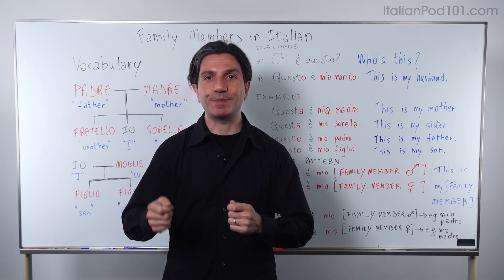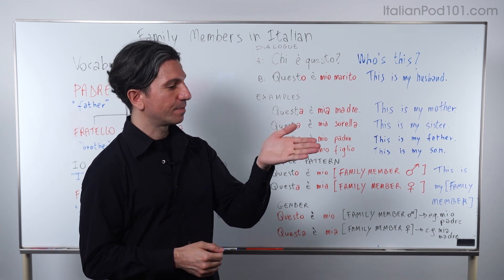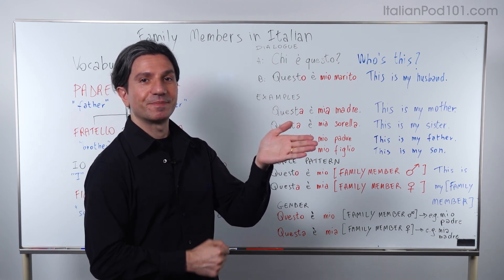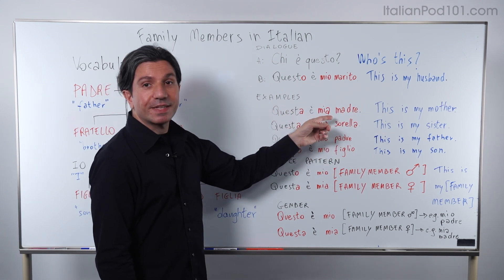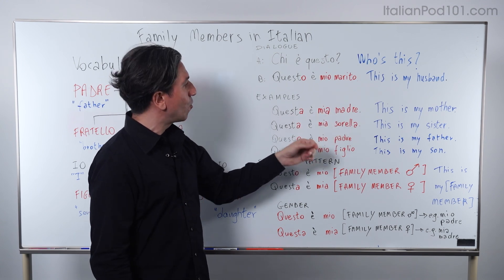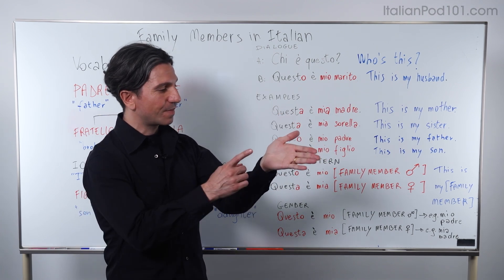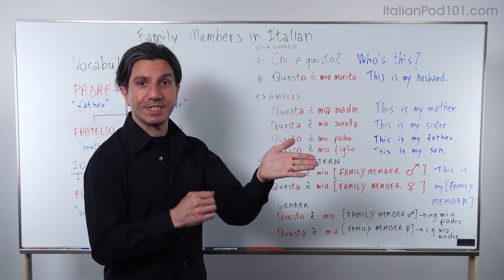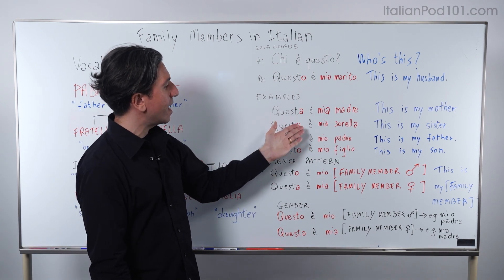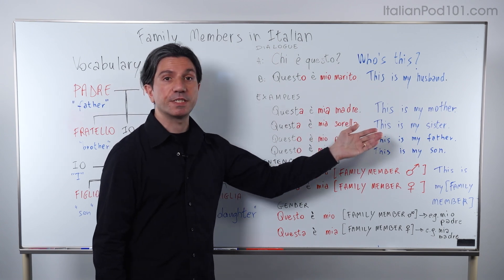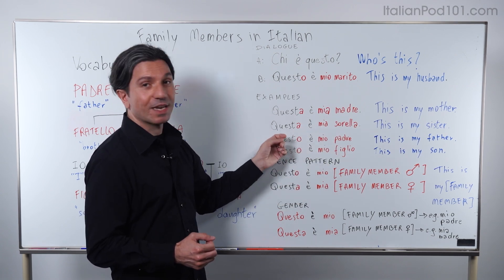Now let's imagine you are showing different pictures to a friend. First, you have a picture with your mother. You say: Questa è mia madre — This is my mother. Madre is singular, feminine, so we use mia and questa. In another picture you can see your sister, so you say: Questa è mia sorella — This is my sister. Sorella is singular, feminine, so we use mia and questa.